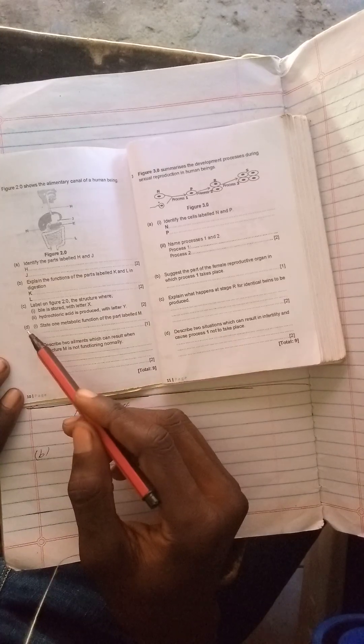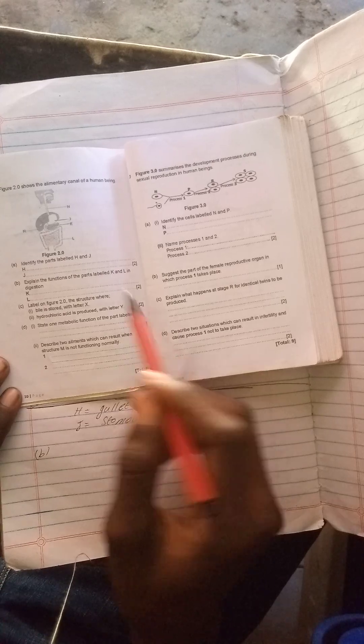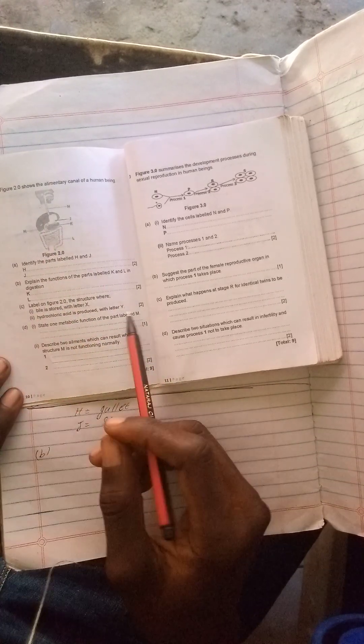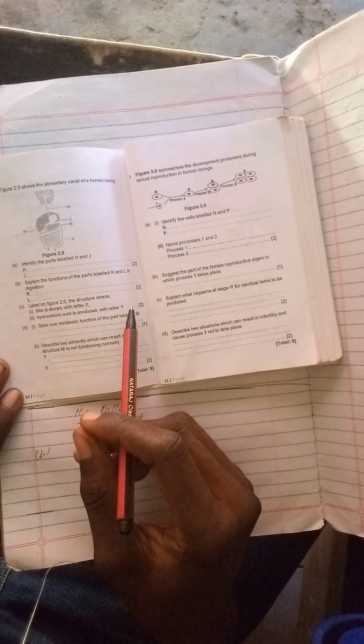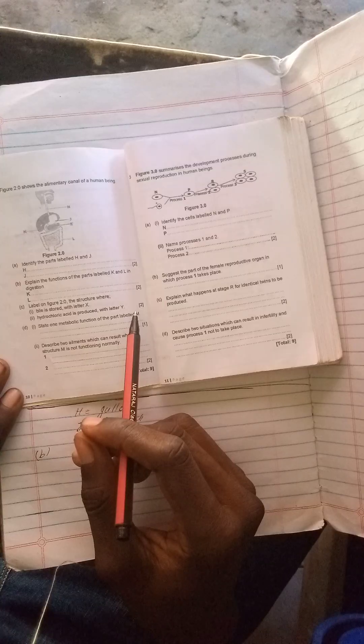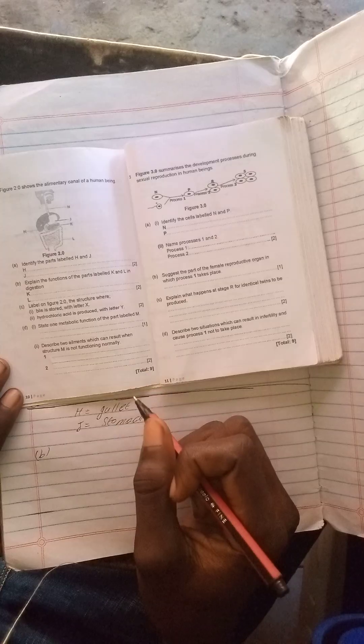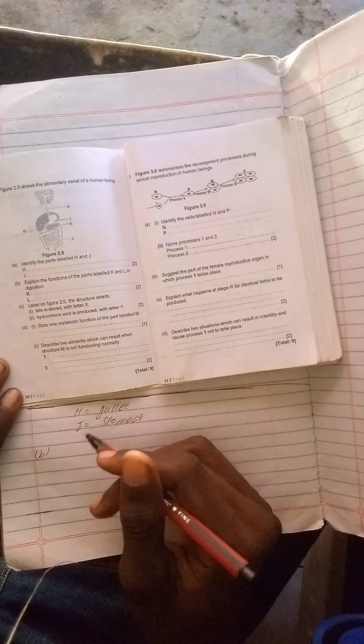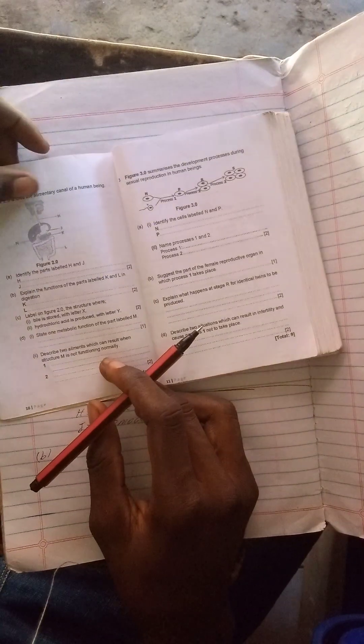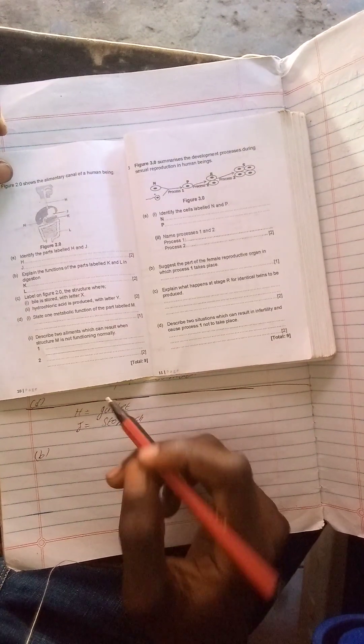Question D reads: state one metabolic function of the part labeled M. The part labeled M is the liver. There are many functions - one of them is detoxification of poison in the body. When someone has taken poison, the liver removes all the toxins from that poison in the body.